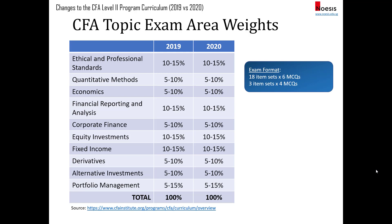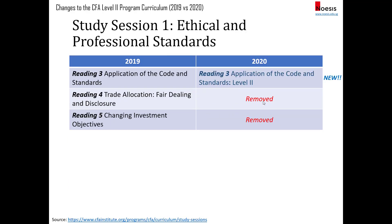For exam weightage there's no change — it remains the same as 2019. For 2020 you will still have the same exam format: 21 item sets, 18 of them based on six multiple choice questions, and three item sets based on four multiple choice questions, giving you 120 multiple choice questions in total.